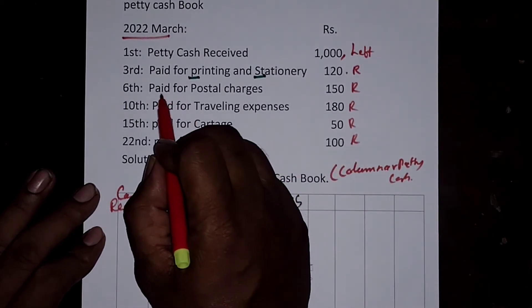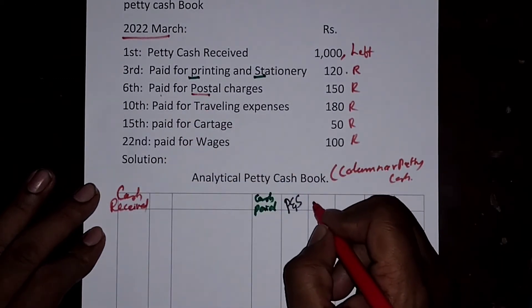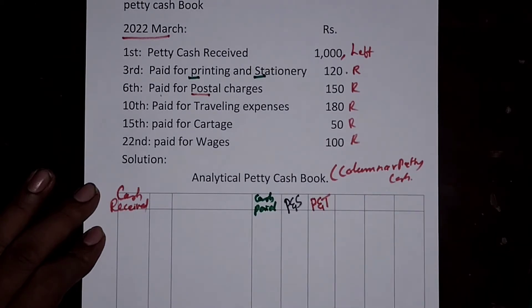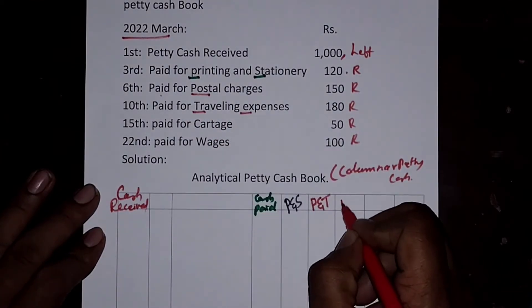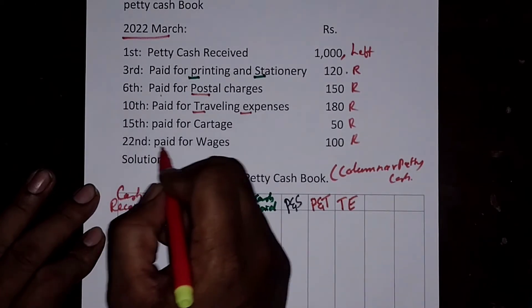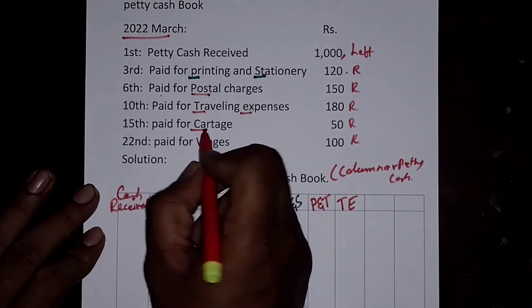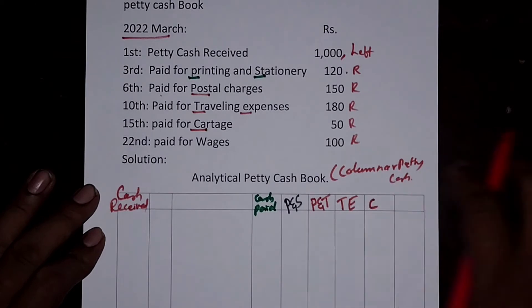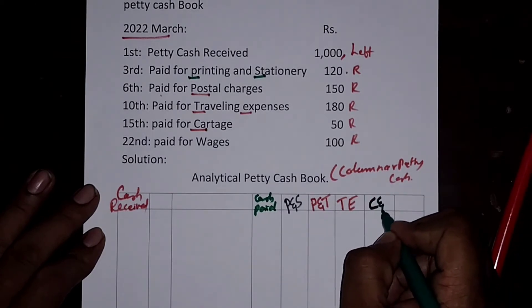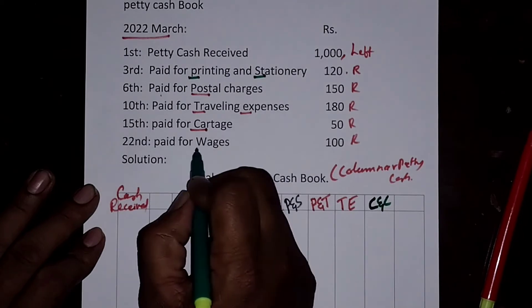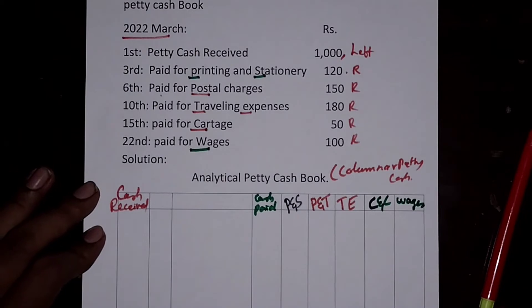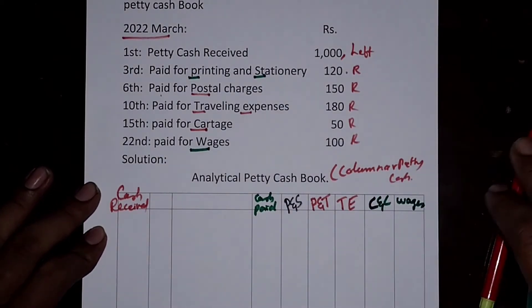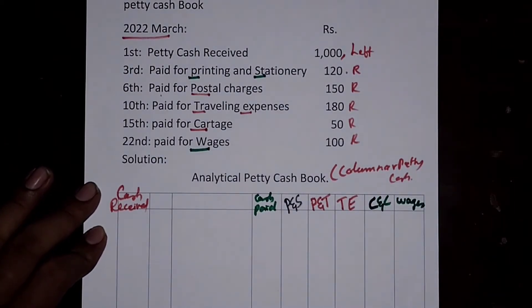The second column is Postal and Telegram charges. The third column is Travelling Expenses (TE). The fourth column is Coolie and Cartage. The last column is Wages. Different columns are maintained for different expenses.